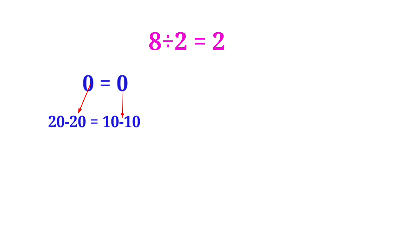Because 20 minus 20 is equal to 0 and 10 minus 10 is equal to 0, so 20 minus 20 is equal to 10 minus 10.